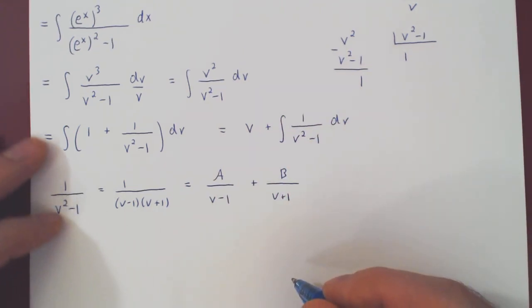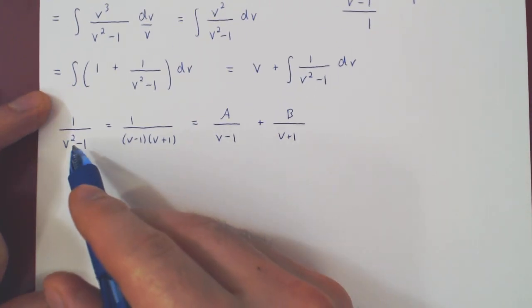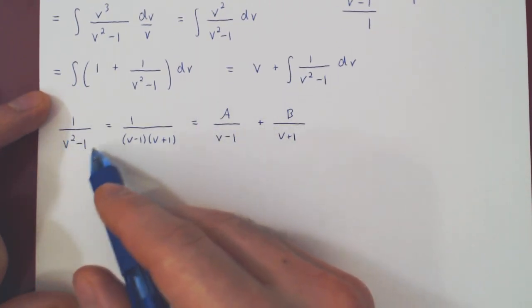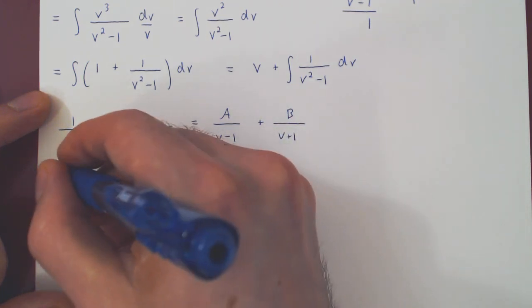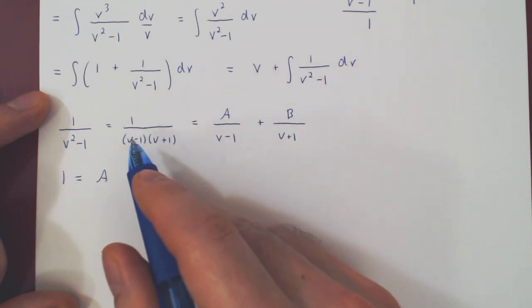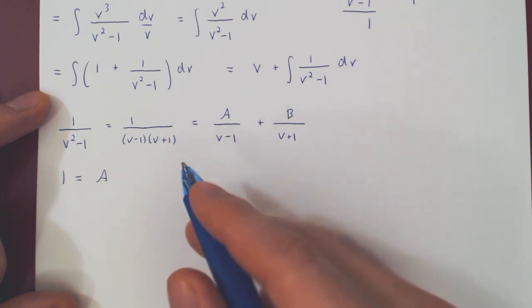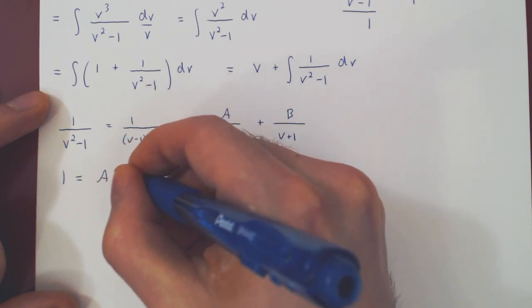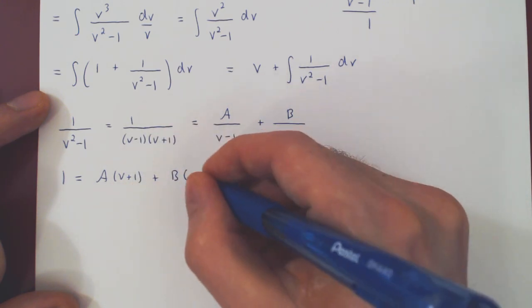As always, we want to go from an equality between two rational functions to an equality between polynomials. So we multiply across by v squared minus 1. So on the left, we're left with 1, which will equal A times v minus 1 times v plus 1 over v minus 1. These will cancel, so A times v plus 1. And by the same argument, we'll be left with B times v minus 1.